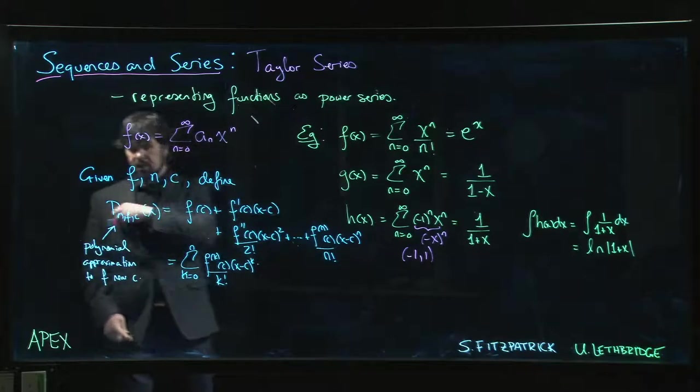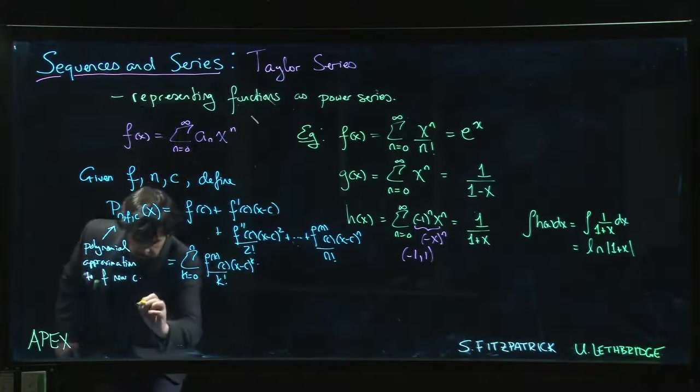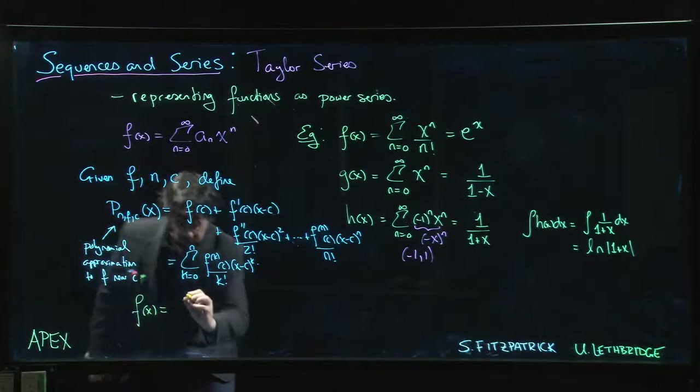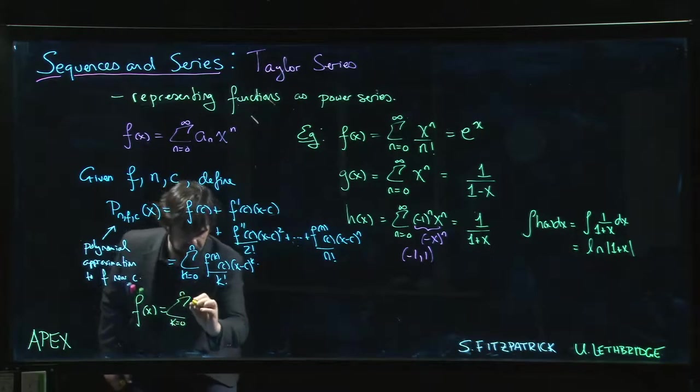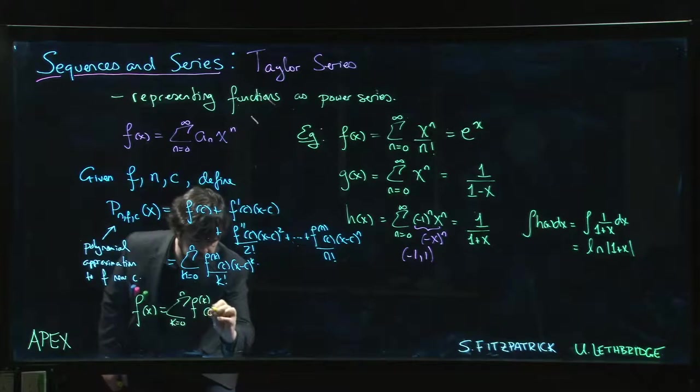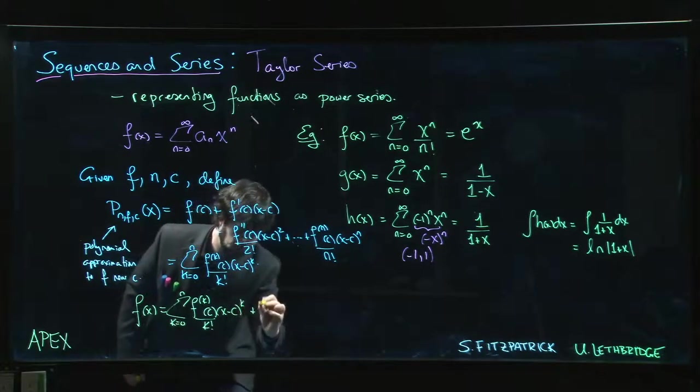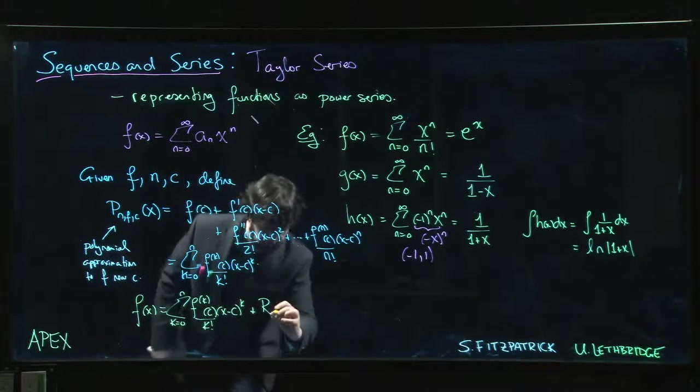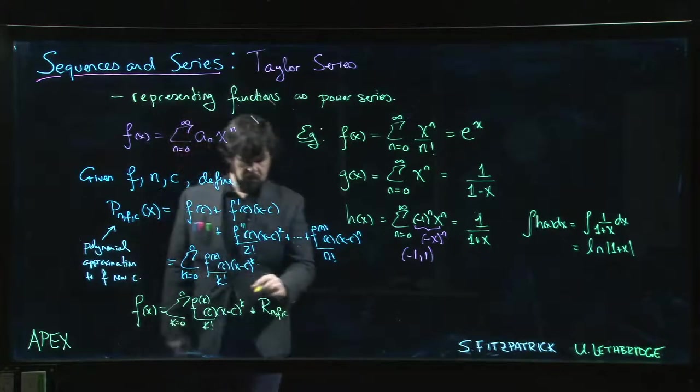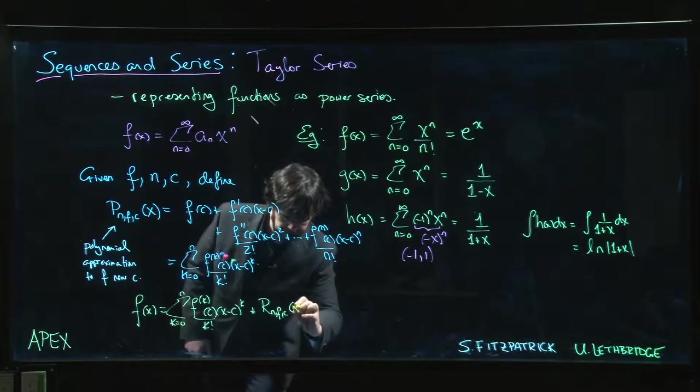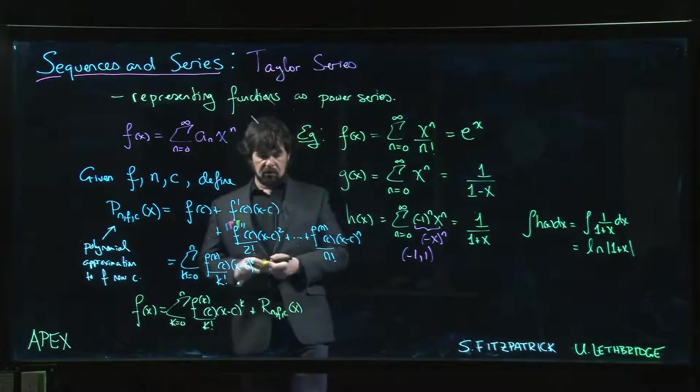The other thing that we see when we study Taylor polynomials is we have this idea of a remainder. f(x), well it's not equal to its Taylor polynomial because the Taylor polynomial is only an approximation, but we can get equality if we tack on this remainder term—the remainder for the degree n polynomial for the function f at c.